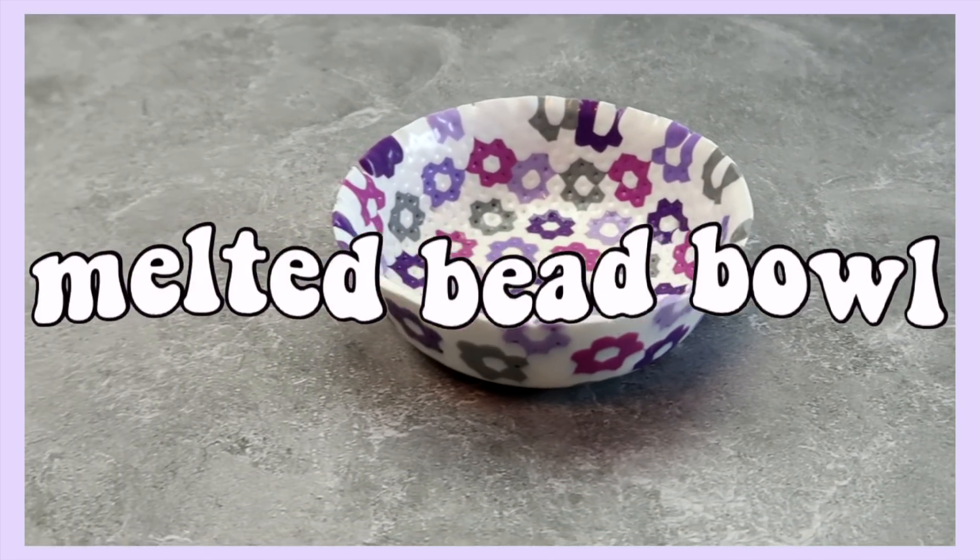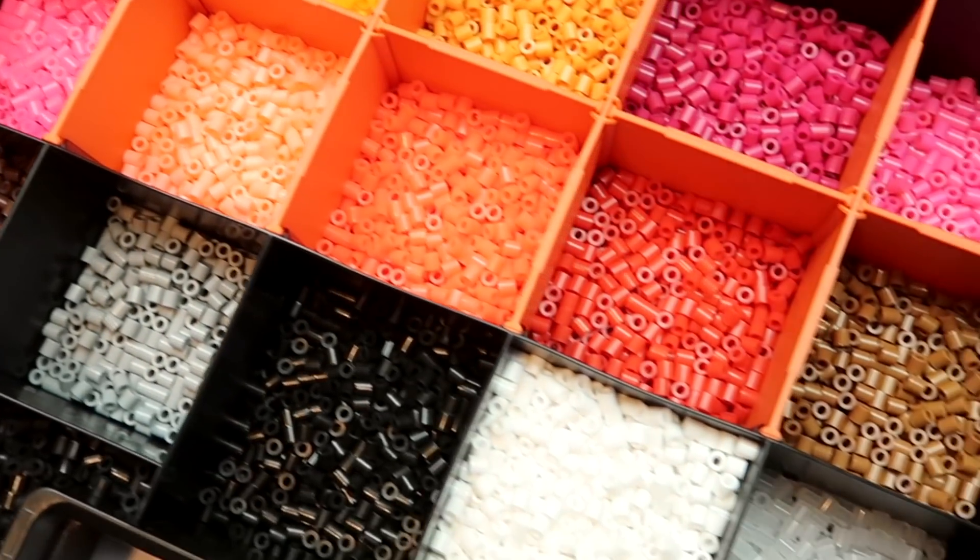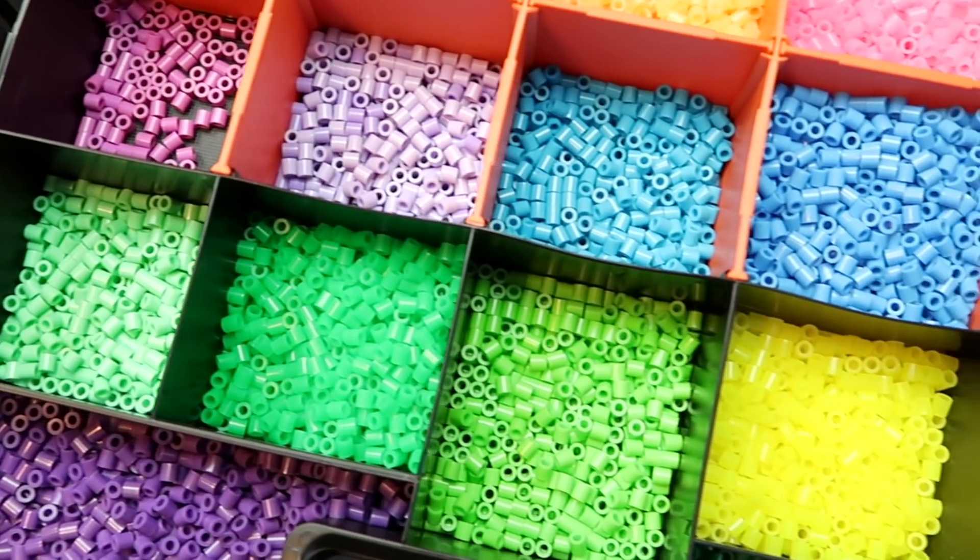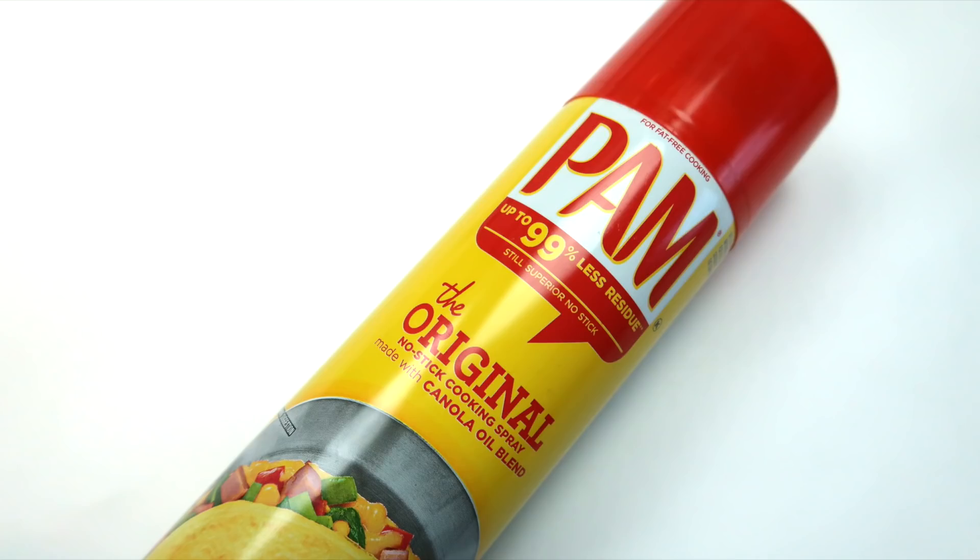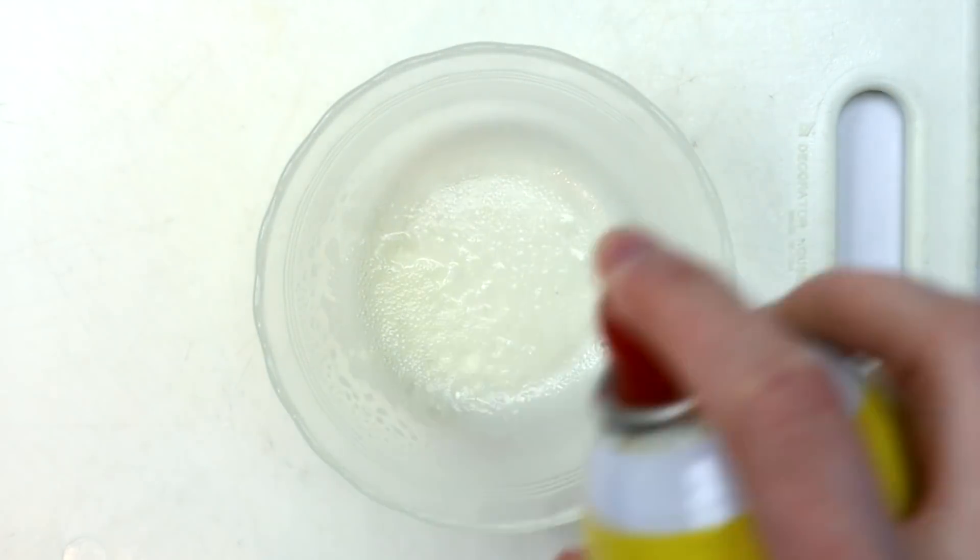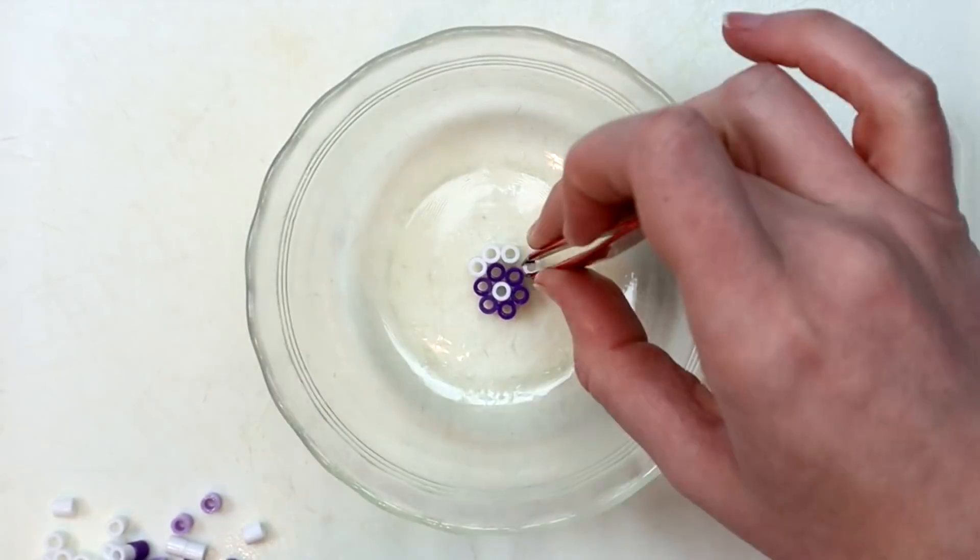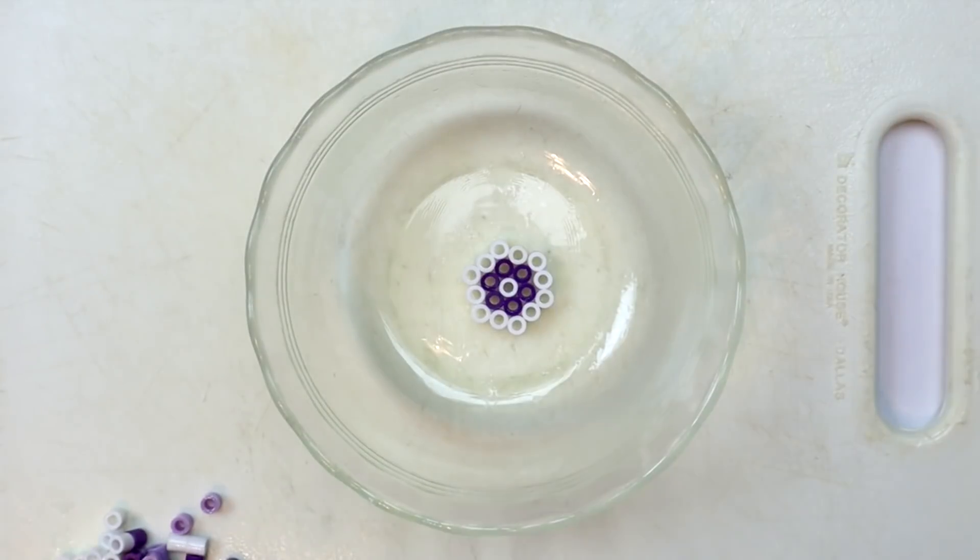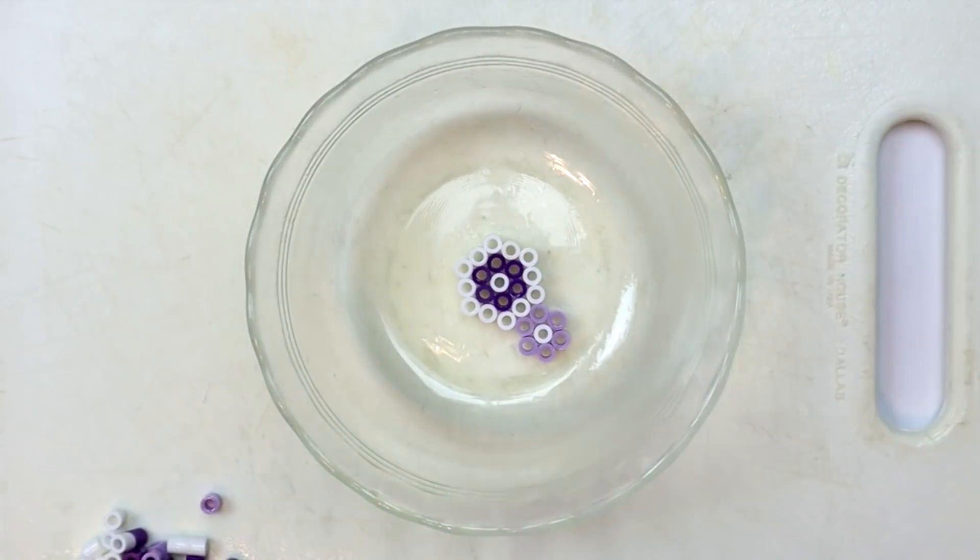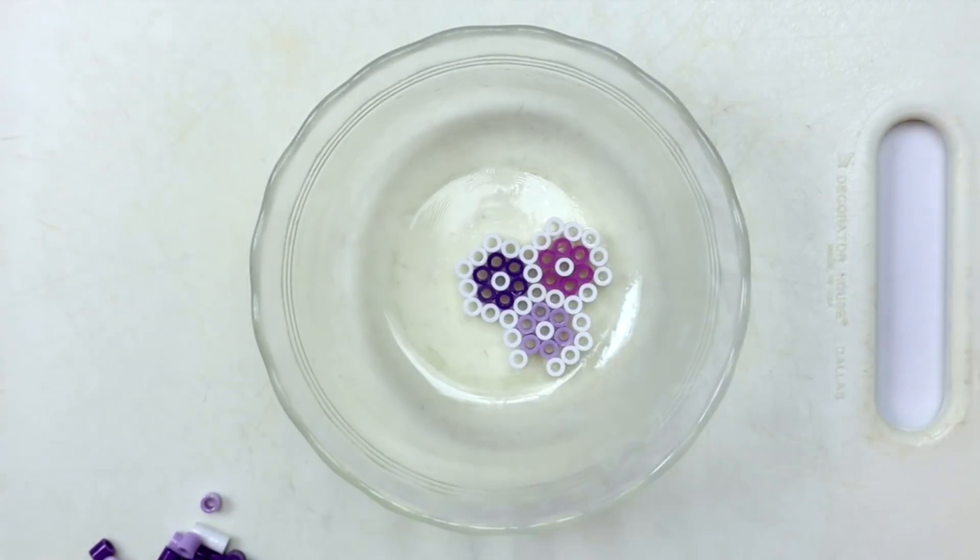This next project is seriously my favorite thing ever, which is this melted bead bowl. I actually used Perler beads for this, but if you don't have these, pony beads will work too. Besides that you'll need a glass bowl, some cooking spray, and some tweezers. First spray the inside of your bowl with some cooking spray, then start adding your beads. Now you can make this as simple or as complicated as you want it to be. You could just dump in a bunch of random beads, press them up around the sides and call it a day, but you know me, I always gotta go making things difficult. So I ended up using tweezers to place my beads in one at a time to create this floral pattern.